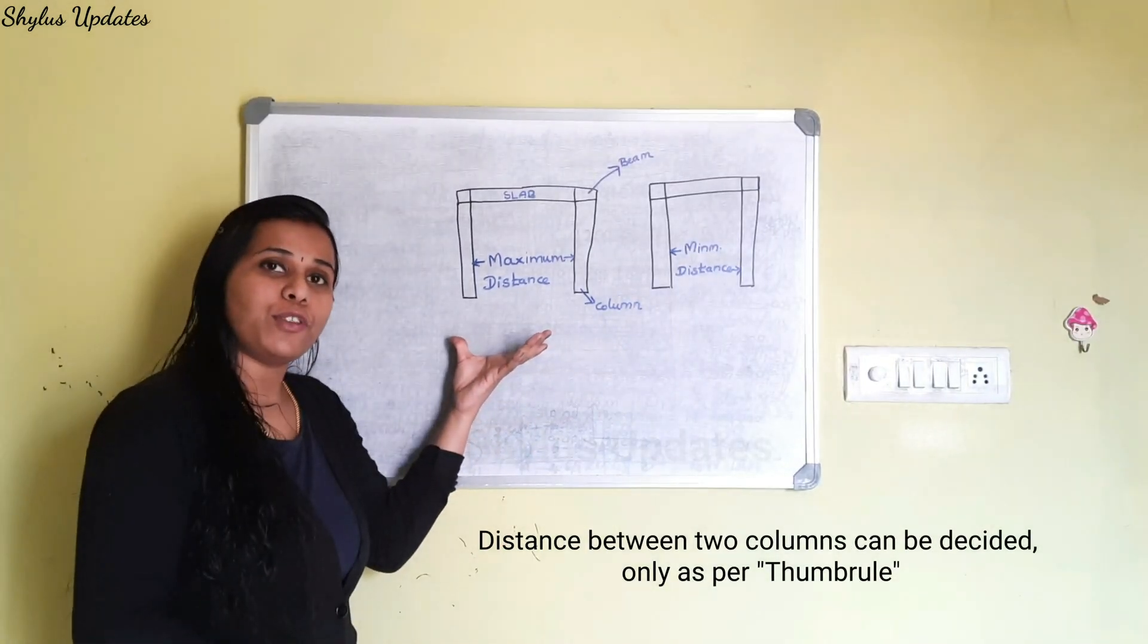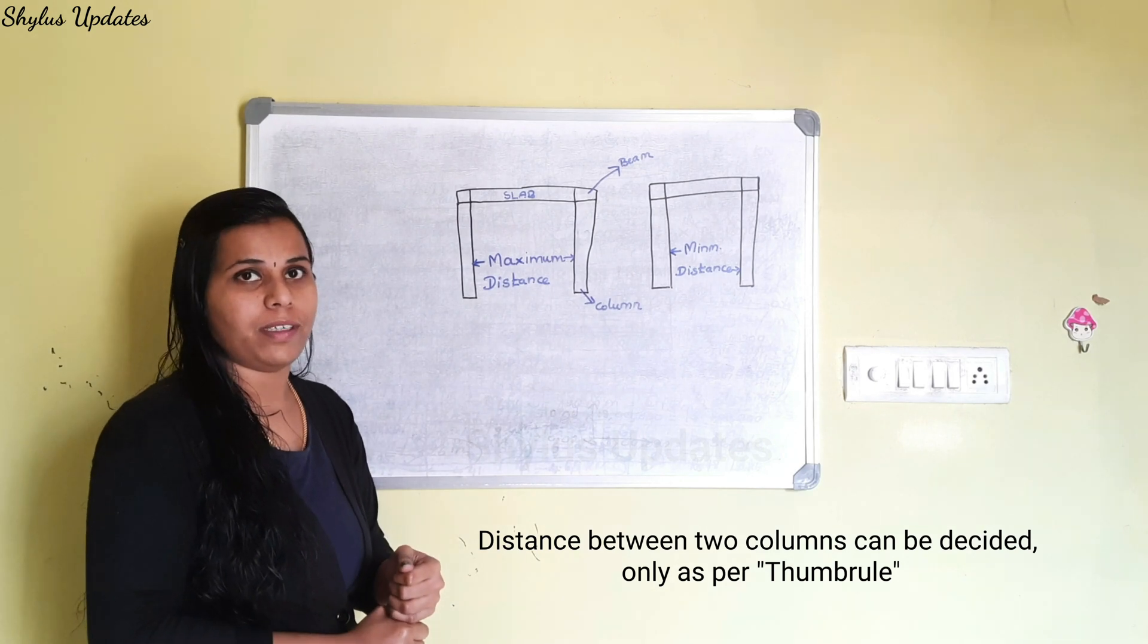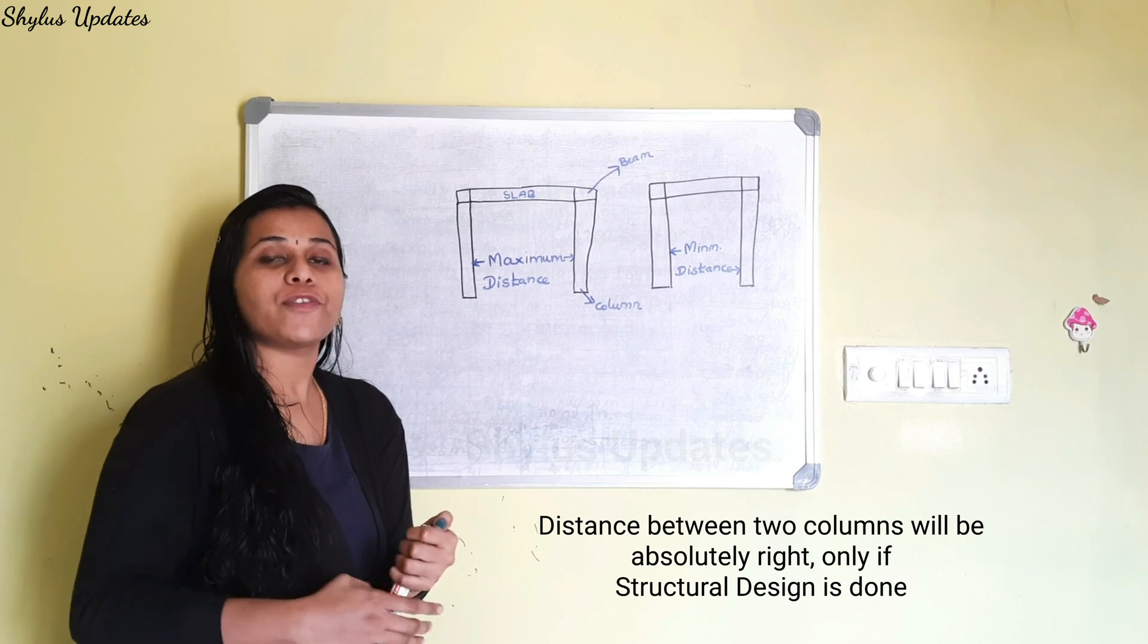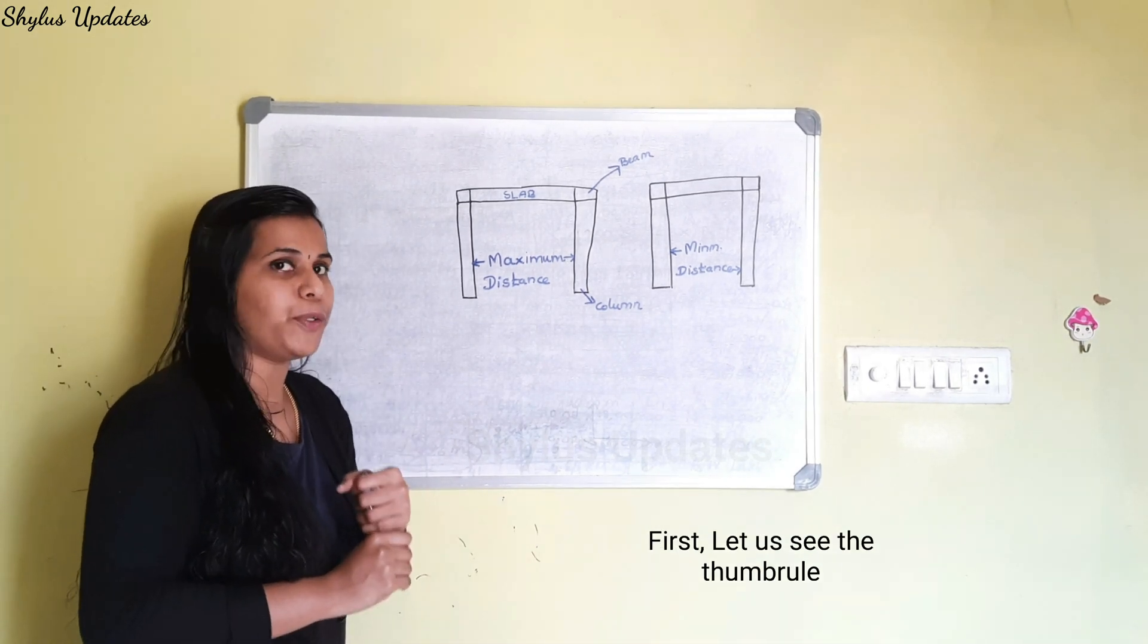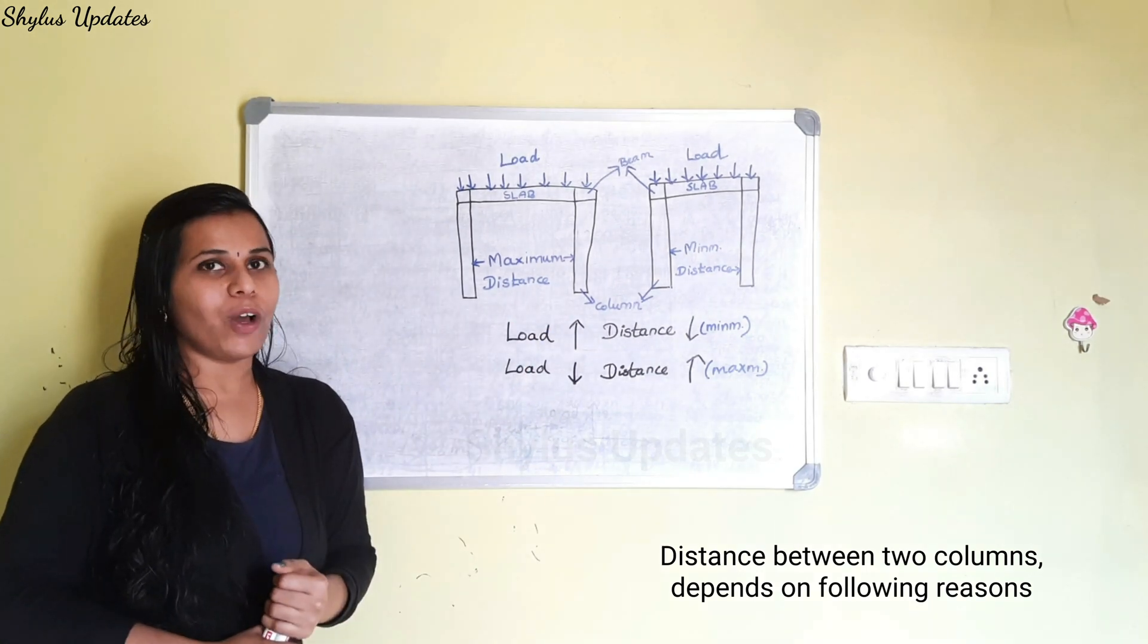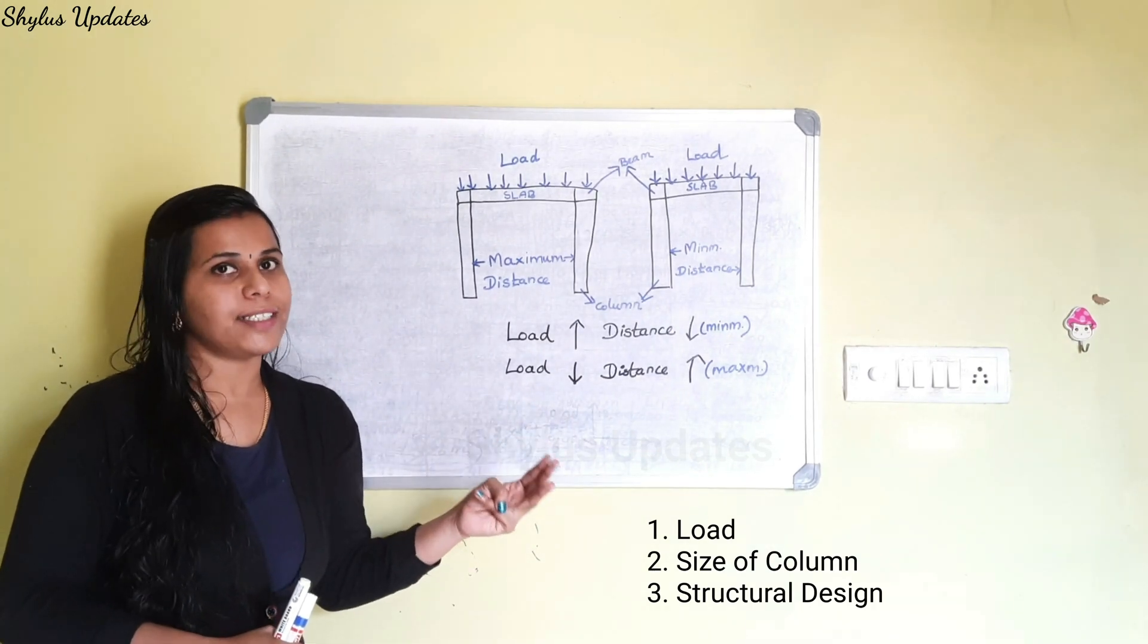The distance between two columns can be decided as per thumb rule. The distance between two columns will be absolutely right only if structural design is done. First, let us see the thumb rule. The distance between the two columns depends on the following reasons: load, size of column, and also structural design.